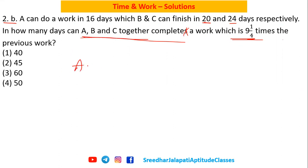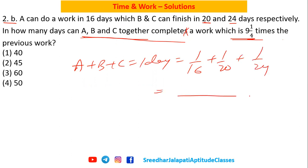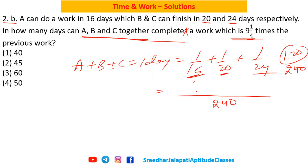First, A, B, C together one day work: A's one day work is 1/16, B's one day work is 1/20, C's one day work is 1/24. Now calculate the LCM of 16, 20, and 24. LCM of 20 and 24 is 120, but 120 is not in the 16 table, so the next multiple is 240. So LCM is 240. 240 goes 15 times into 16, 12 times into 20, and 10 times into 24.